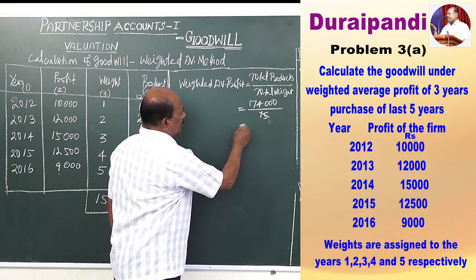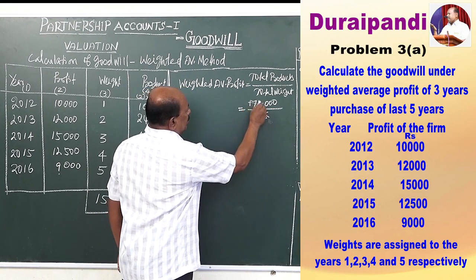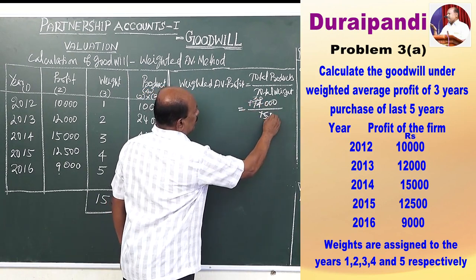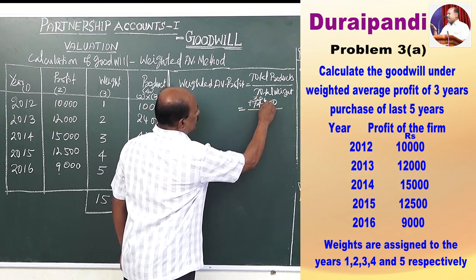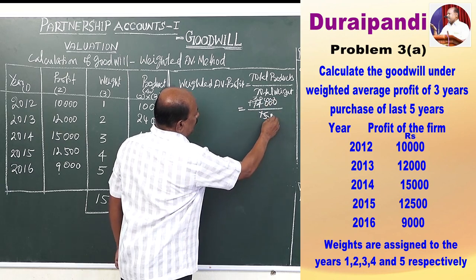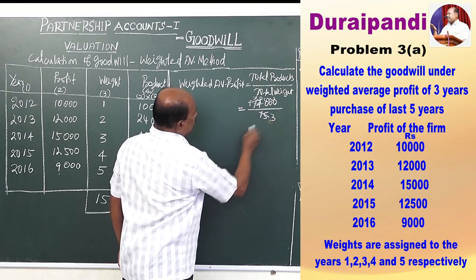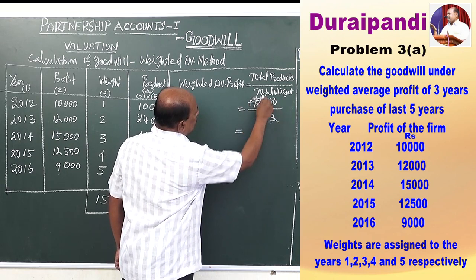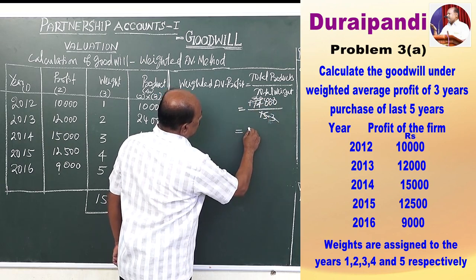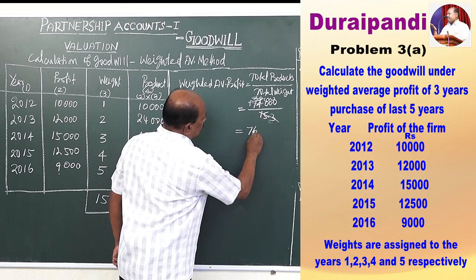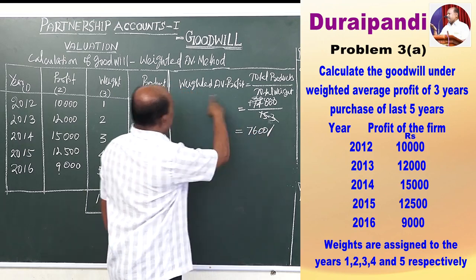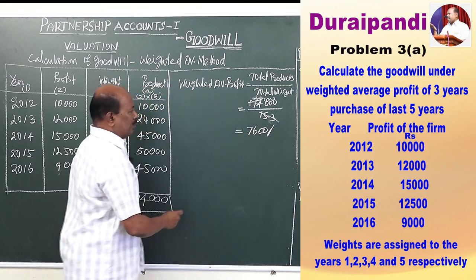That equals 38,000 — then 7,600. This is the weighted average profit.